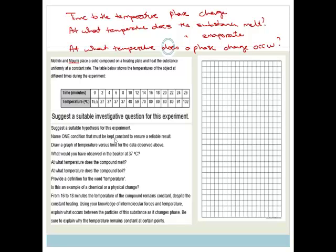Now it says name one condition that must be kept constant to ensure a reliable result. So what are we doing? We are taking a solid compound on a heating plate and heating the substance uniformly at a constant rate. What do we need to keep constant? We could say we need to keep the mass of the solid constant. In other words, we need to be able to have it in a container so some of it doesn't run off the heating plate. Or we could say that we need the outside temperature to remain the same. Basically something that's not going to allow this experiment to be affected.